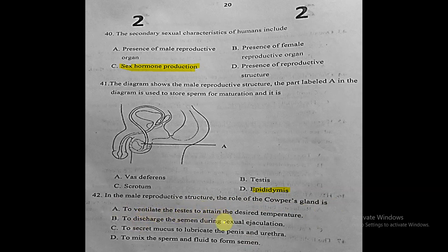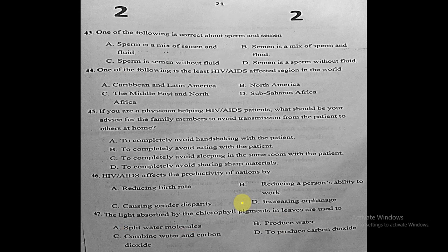Question forty-two: in the male reproductive structure, the role of Cowper's gland is what? The correct answer is to secrete mucus to lubricate the penis and urethra. This is the specific role of Cowper's gland.